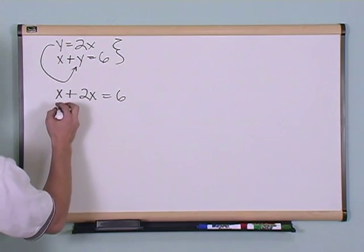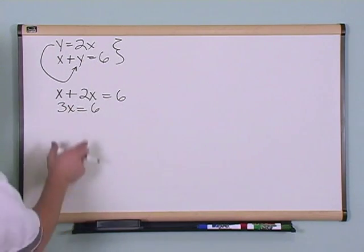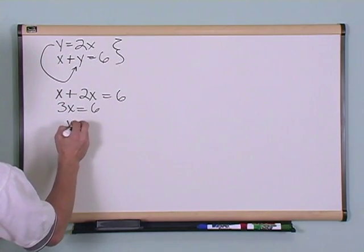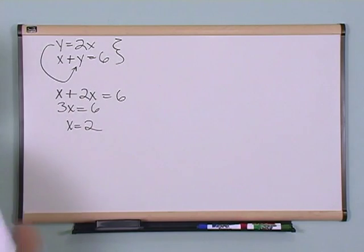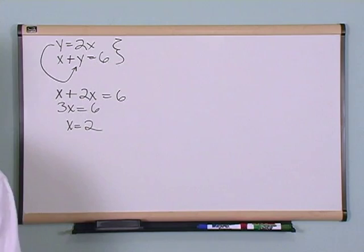I can simplify this and say 3x equals 6, and then I can solve for x and say x is equal to 2, because I just divide both sides by 3. So I have, I know that x is equal to 2.